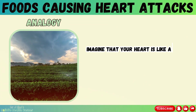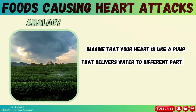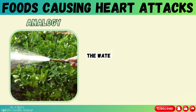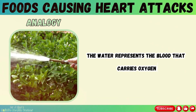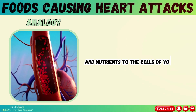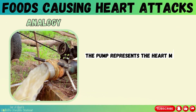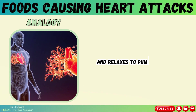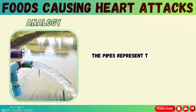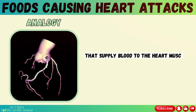Imagine that your heart is like a pump that delivers water to different parts of a garden. The water represents the blood that carries oxygen and nutrients to the cells of your body. The pump represents the heart muscle that contracts and relaxes to pump the blood. The pipes represent the coronary arteries that supply blood to the heart muscle itself.